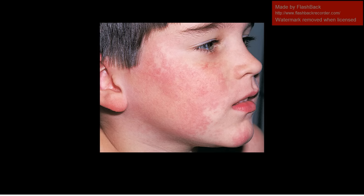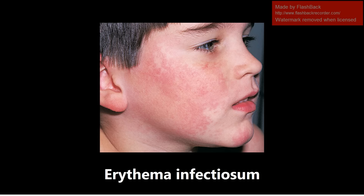This next one is also pretty common. This is erythema infectiosum, also called slapped cheek disease, also called fifth disease. Remember this one is caused by parvovirus B19, which is the only single-stranded DNA virus that's relevant for boards. You get this slapped cheek appearance and this is seen in kids. Another point is that parvovirus B19, when seen in adults, can cause acute arthropathy.